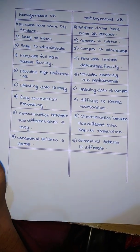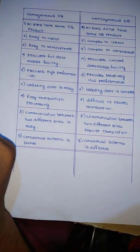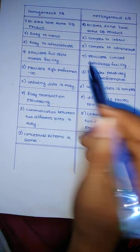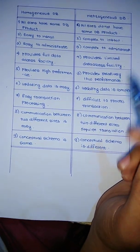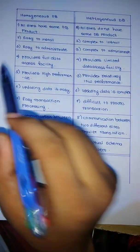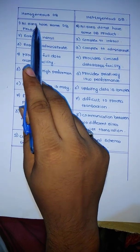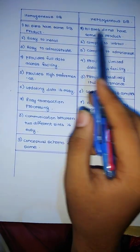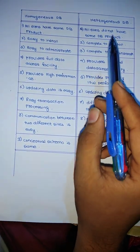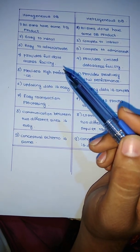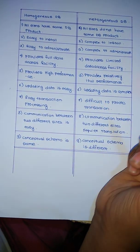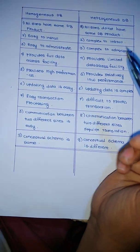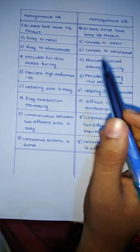A homogeneous database is a database which has identical DBMS and it also has an identical operating system. In a homogeneous database we have a single interface, while in a heterogeneous database we have different types of interfaces and different types of operating systems.